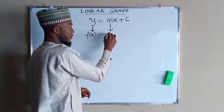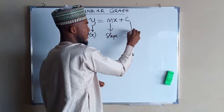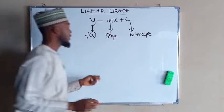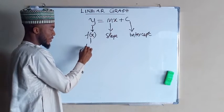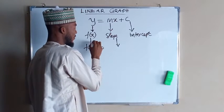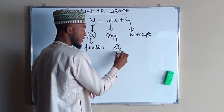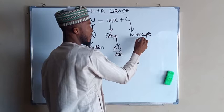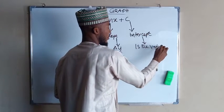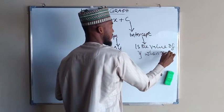m here stands for slope, while c here stands for intercept. This f of x is the function of x. Slope stands for the change in y divided by change in x, while the intercept is the value of y when x is equal to zero.